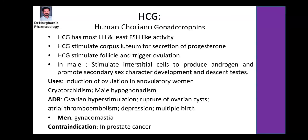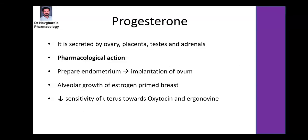HCG — human chorionic gonadotropins — has mostly LH-like and least FSH-like activity. It stimulates the corpus luteum for secretion of progesterone and stimulates follicles to trigger ovulation. In males, it stimulates interstitial cells to produce androgens, promotes secondary sex character development, and promotes descent of testes. Based upon that, it is used in cryptorchidism — undescended testes — in newborn children, and in females as an ovulation-inducing agent. Side effects include ovarian hyperstimulation, rupture of ovarian cyst, multiple births, and gynecomastia in males. HCG is contraindicated in prostate cancer.